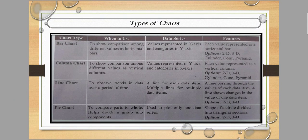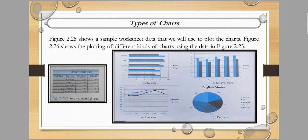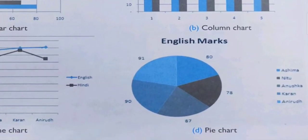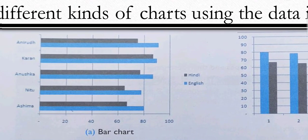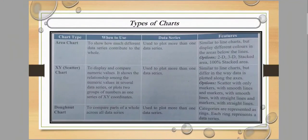Next is the pie chart. It is used to compare parts of a whole and helps divide a group into its components — a circle divided into sections. It is used to plot only one data series. The shape is a circle divided into triangular sections.